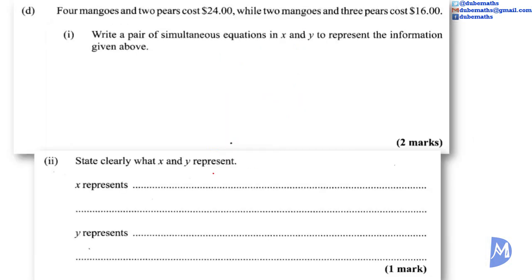Part D. 4 mangoes and 2 pears cost $24, while 2 mangoes and 3 pears cost $16. Part 1: Write a pair of simultaneous equations in X and Y to represent the information given above. 4 mangoes, let's say 4X, and 2 pears, 2Y is equal to 24. And 2 mangoes, 2X plus 3Y is equal to 16.